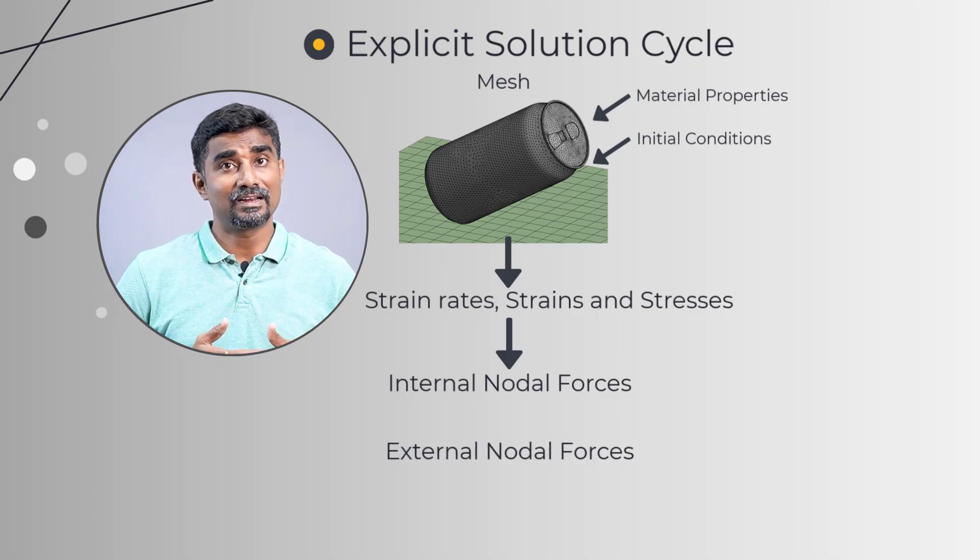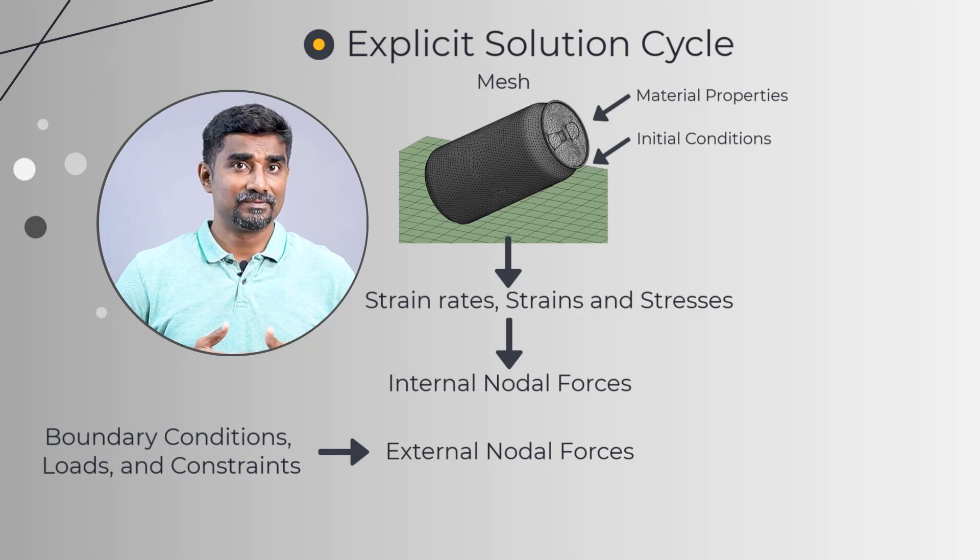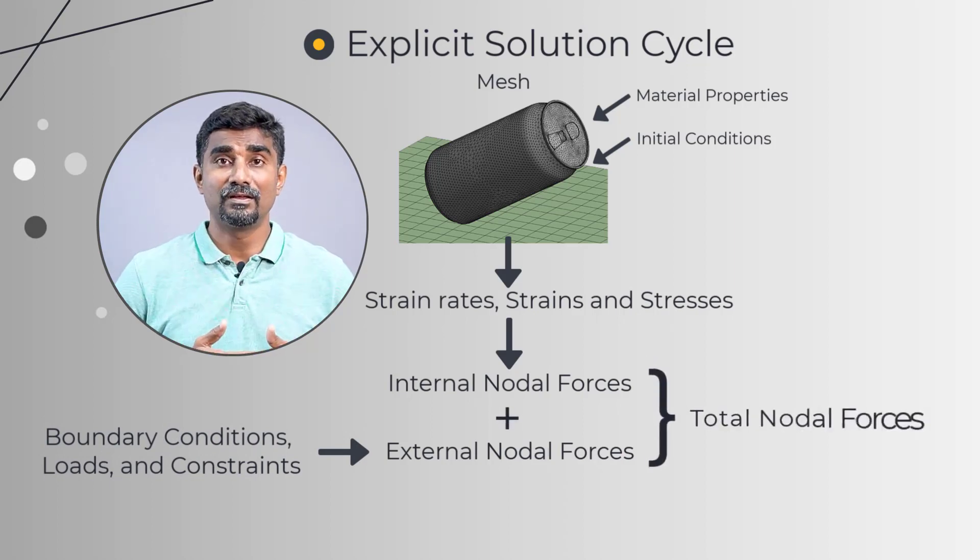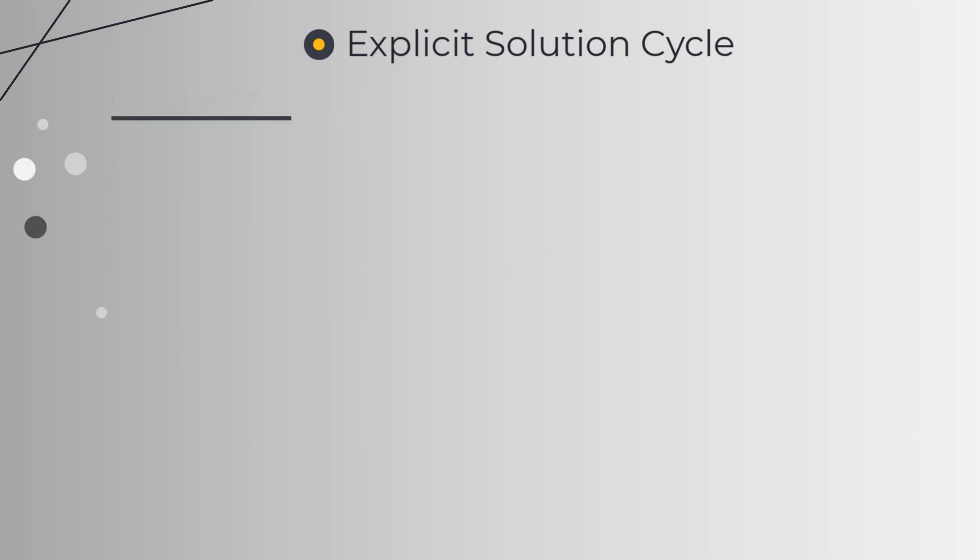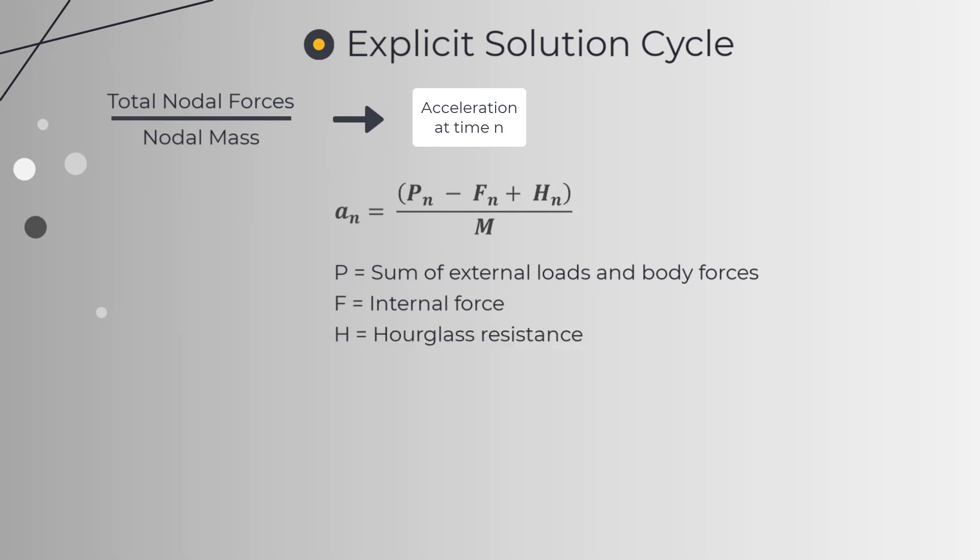This is then added together with the internal nodal forces. The total nodal forces are divided by the nodal mass to produce nodal accelerations. Thus, at the time n, the acceleration can be noted as shown here. Here, p is a sum of external loads and body forces, f is an internal force, h is hourglass resistance and m is a diagonal mass matrix.